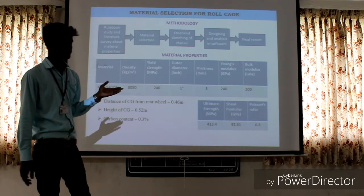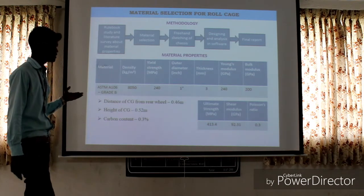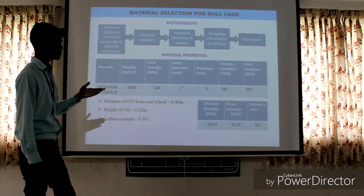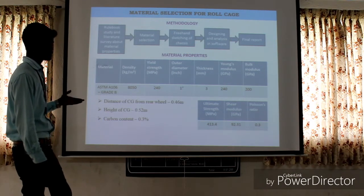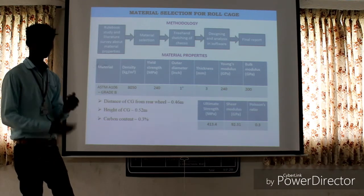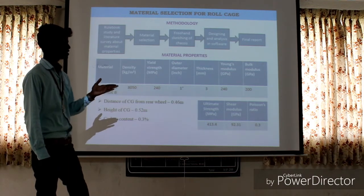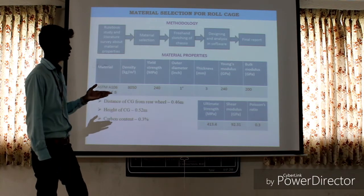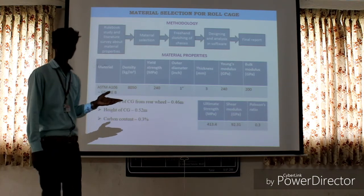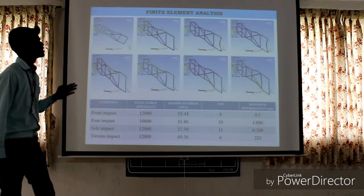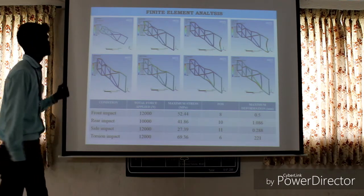These are the material properties. The material we have used is ASTM A106 grade. Distance of CG from layer width is 0.46 m. The height of CG is 0.52 m. The carbon content of the material is 0.3%. Ultimate strength, shear modulus, and Poisson's ratio are 413.4, 92.31, and 0.3 respectively. The finite element analysis is here.